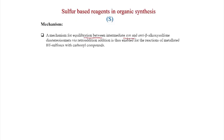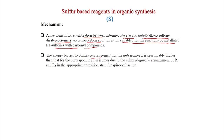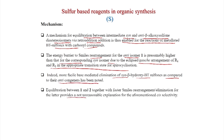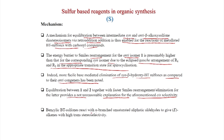A mechanism for equilibration between intermediate syn and anti beta-alkoxide sulfone diastereomers via retro-addition is enabled for metallated benzothiazolyl sulfones reacting with carbonyl compounds. The energy barrier to Smiles rearrangement for the anti isomer is presumably higher than for the syn isomer due to the eclipsed arrangement of R₁ and R₂ in the transition state. More facile base-mediated elimination of syn beta-hydroxy benzothiazolyl sulfones compared to their anti congeners has been noted. Benzylic benzothiazolyl sulfones react with alpha,beta-unsaturated aliphatic aldehydes to give E-alkenes with trans selectivity.